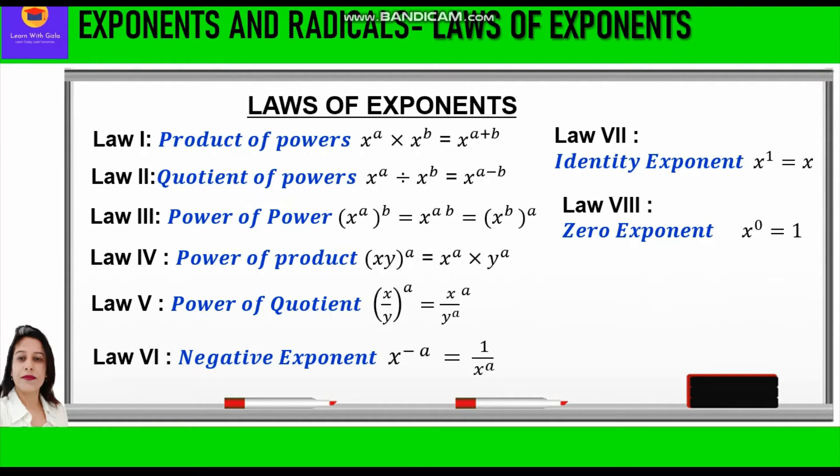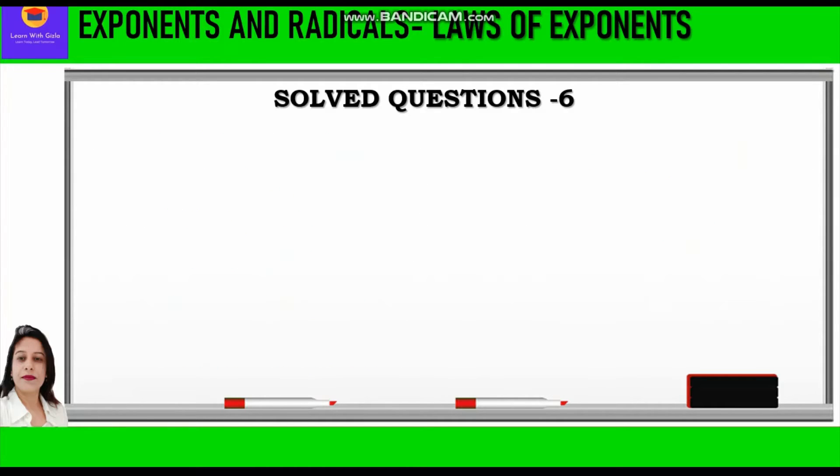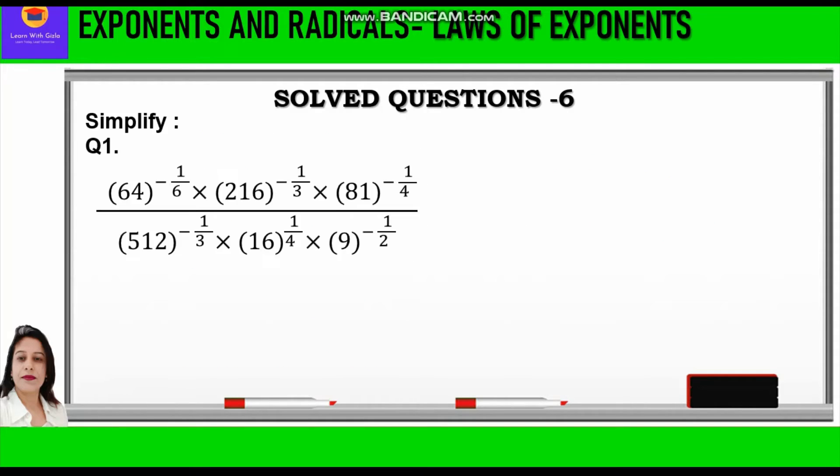The seventh law is Identity Exponent: x raised to power 1 is equal to x itself. The eighth law is Zero Exponent: anything raised to power 0 is 1.